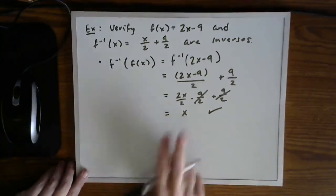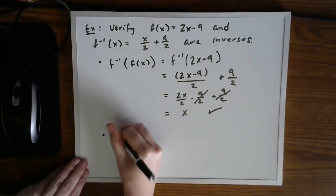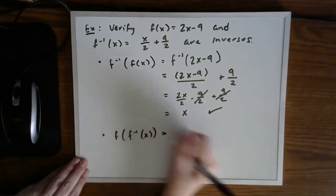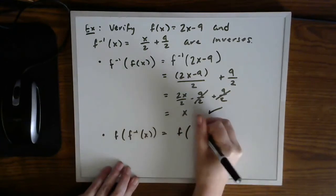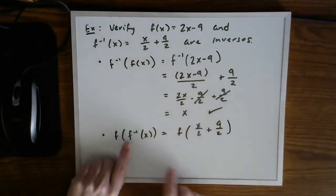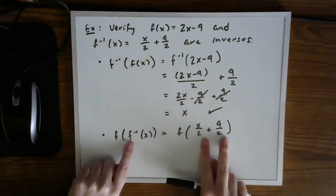So we have now verified the first composition. Let's reverse the order. So f of f inverse of x is equal to f of x over 2 plus 9 halves.